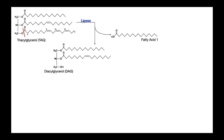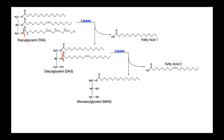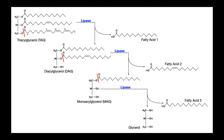If we have the reaction with one lipase, it may remove a fatty acid — for example, the polyunsaturated fatty acid is removed, and we're left with a diacylglycerol. The diacylglycerol will react again with a lipase, and it will cleave off this second fatty acid, leaving us with a monoacylglycerol. Once more, the monoacylglycerol reacts with the lipase, and the lipase will cleave off the final fatty acid. So basically, three fatty acids become removed from the triacylglycerol, and we're left with the glycerol backbone. All three of these fatty acids can be used for energy production or as a carbon source.